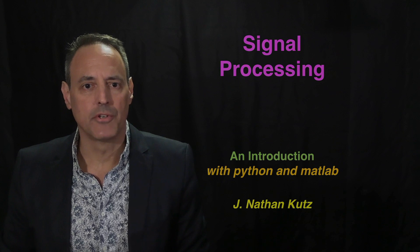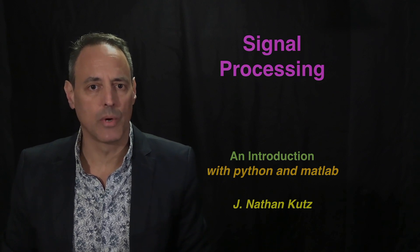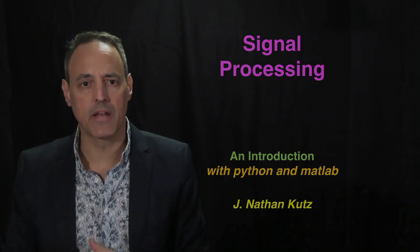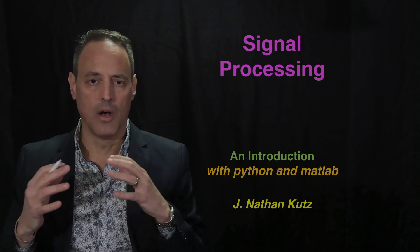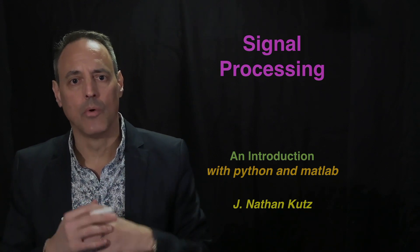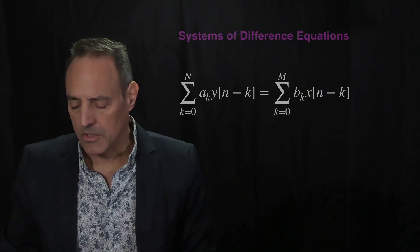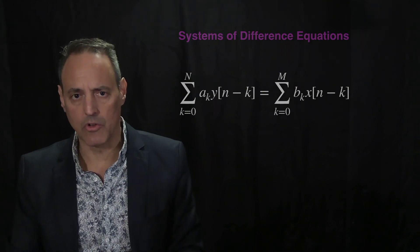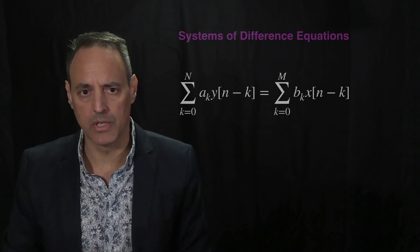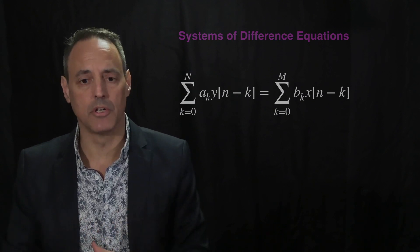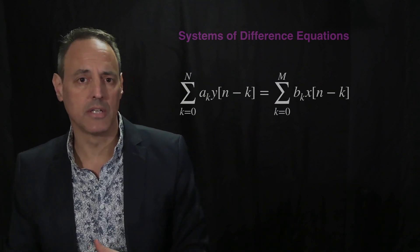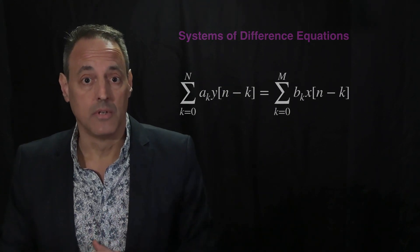We're going to talk about discrete Fourier transforms and specifically thinking about difference equations, which are the discrete version of differential equations. They look at differences in sequences, and what we want to understand is how to produce a way to represent LTI solutions in this space of difference equations. We're going to do the same thing here with systems of difference equations as we did previously in the continuous case, and we're going to consider this in the context of the discrete time Fourier transform.